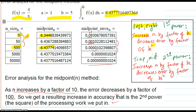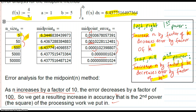Moving on to the trapezoid and midpoint methods — we've found that those are second-power methods, meaning that if we increase n by a factor of k, that decreases the error by a factor of k squared. We've been using 10 as the factor of increase, but we could use 6, 7, or 20 — any factor. This rule holds: if you increase n by any factor k, your error goes down by a factor of k squared for the trapezoid and midpoint. So these are far better methods than the left and the right.